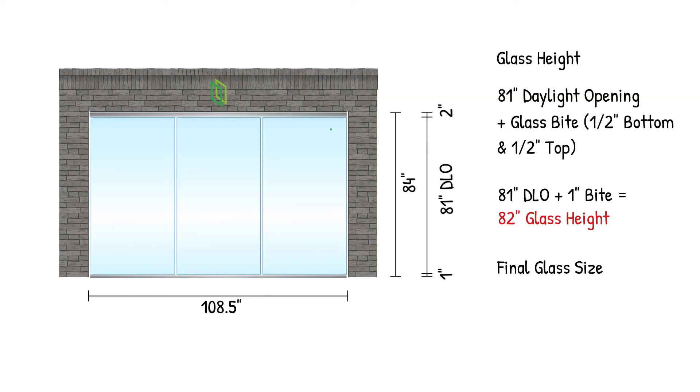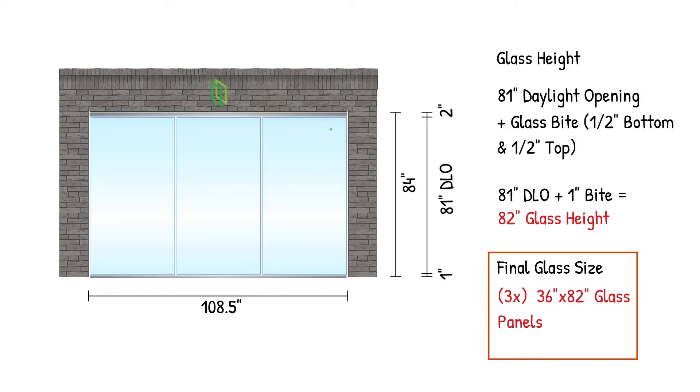So we need three 36 inch wide by 82 inch tall glass panels. Of course, there are going to be a lot of scenarios that can come up, but in the end, knowing the daylight opening and the bite is the key to ordering the glass. I hope you enjoyed this video — thank you for watching.